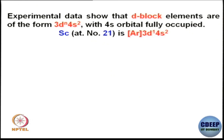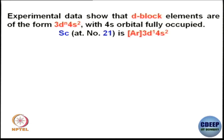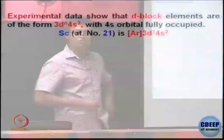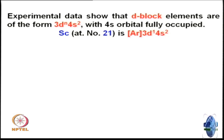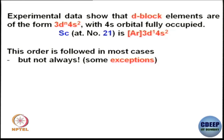Experimental data show that d-block elements are of the form 3d^n 4s². That means 4s electrons are getting filled out preferentially compared to 3d electrons, with the 4s orbital fully occupied. For example, scandium (atomic number 21) has the electronic configuration: argon core, then 3d¹ 4s². So 4s is filled out first (2 electrons), then 3d¹. For titanium, it would be 3d² 4s² and so on. This order is followed in almost all cases — 4s² electrons are assigned first, then remaining electrons go to 3d.